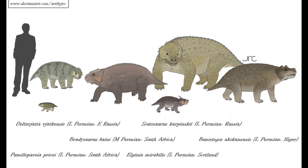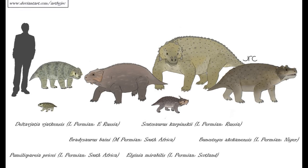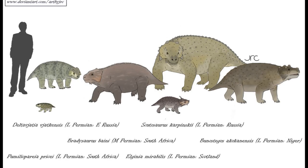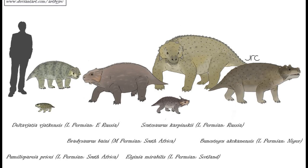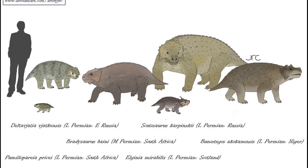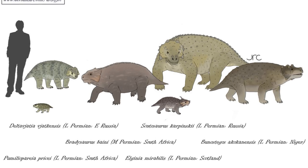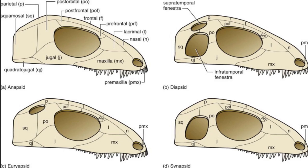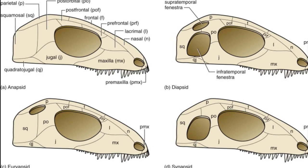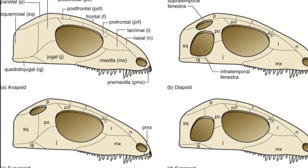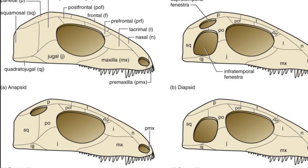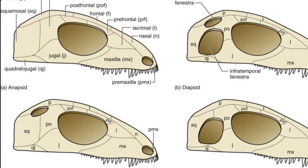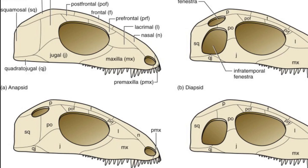Most modern phylogenetic studies indicate that the most basal members of this clade were the para-reptiles, an interesting lineage that first appeared in the fossil record during the late Carboniferous and expanded greatly during the Permian. Once referred to as anapsids, due to the fact that many species lacked an opening in the skull, it was later found that some of these animals did indeed possess temporal fenestre after all.